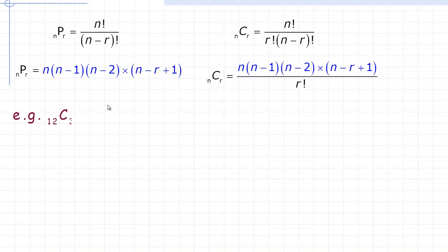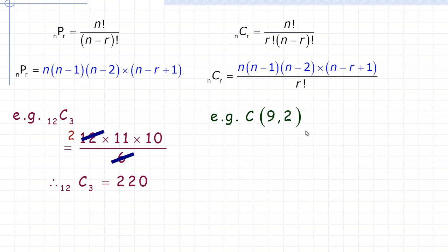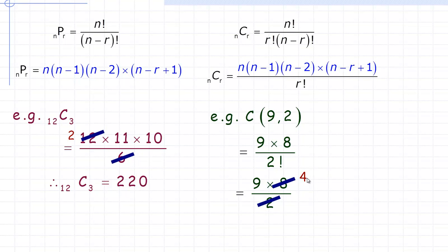Let's work through examples. 12 choose 3: write 12 × 11 × 10 (three numbers) divided by 3 factorial. Since 3 factorial = 6, and 6 goes into 12 twice, we get 2 × 11 × 10 = 220. For 9 choose 2: write 9 × 8 divided by 2 factorial, which is 2. Since 2 goes into 8 four times, we get 9 × 4 = 36.